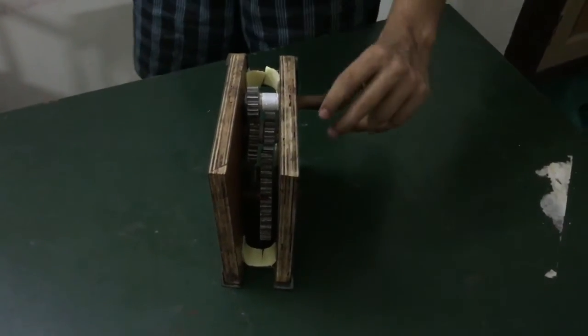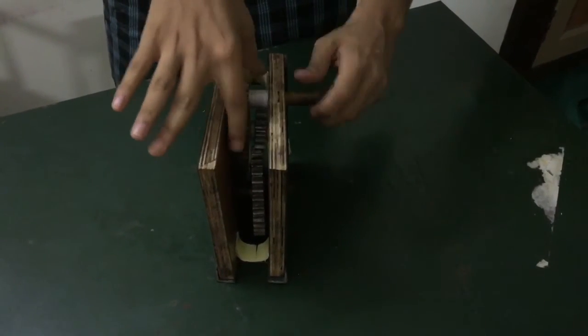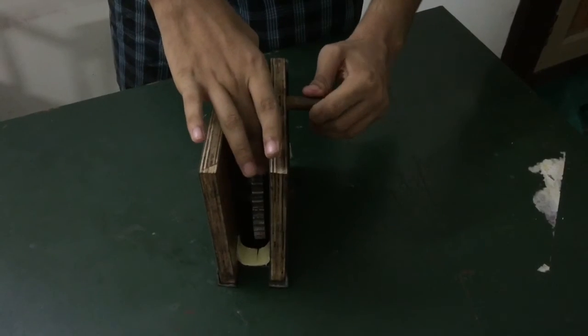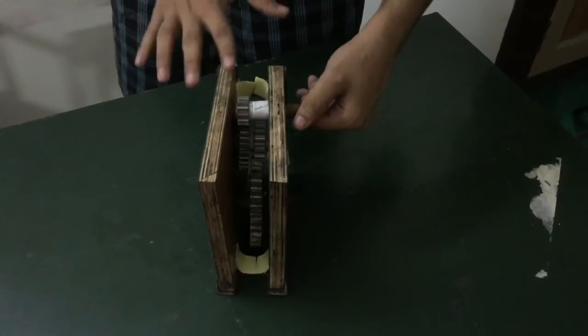Now the gear ratio of this gearbox. The gear ratio is defined as the ratio of number of teeth of this engagement multiplied by the ratio of number of teeth of this particular engagement. As you can see, our